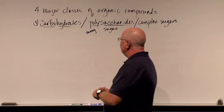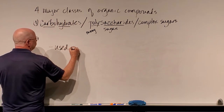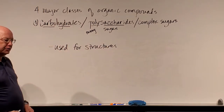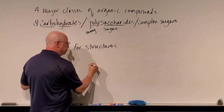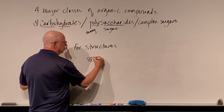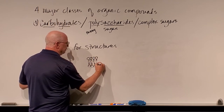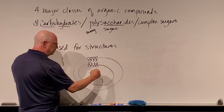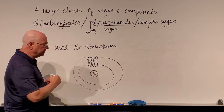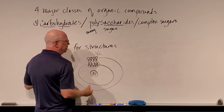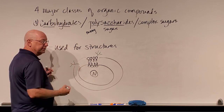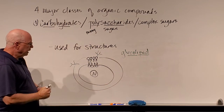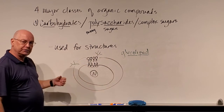A second use for carbohydrates is structural. There are structural carbohydrates. Cells have a lipid bilayer forming the cell membrane. Our cells can also attach sugars or long-chain carbohydrates to some of the lipids — these are called glycolipids. A glycolipid is a lipid with sugar attached to it, and these can help form structural components of the cell membrane.